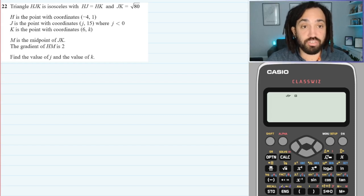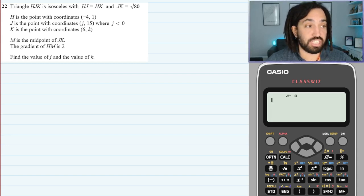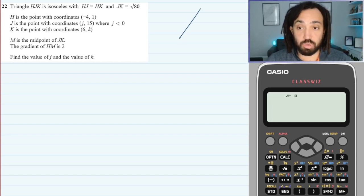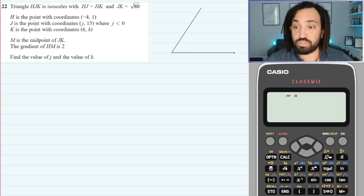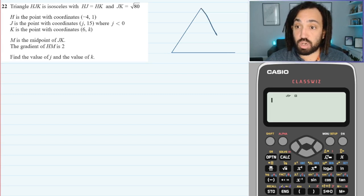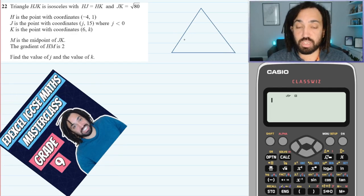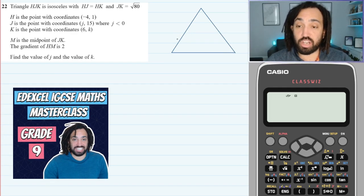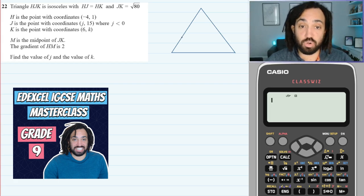So let's get into it. The first thing I would do, because it says that there's a triangle here, I would just draw a triangle to get some sort of perspective as to what we're working with — I always find that quite useful for these types of questions. And if you want to do more grade 9 type questions, I've got a session tomorrow which is Sunday, so check that out — link in the description. I've just been going over some of the hardest IGCSE questions to get people practice for grade 9.